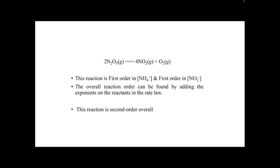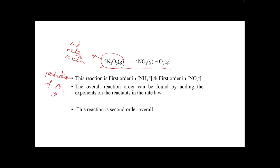We can check different equations. This reaction has only one reactant — dinitrogen pentoxide — and it is a second-order reaction. For the reaction producing nitrogen gas from ammonium ions and nitrite ions, the reaction is first order in ammonium and first order in nitrite, giving an overall second-order reaction.